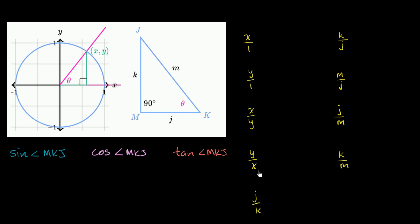On the right-hand side, we have a bunch of expressions that are just ratios of different information given in these two diagrams. Over here on the left, we have the sine, cosine, and tangent of angle mkj. Angle mkj is this angle right over here, same thing as theta. These two angles have the same measure. What we want to do is figure out which of these expressions are equivalent to which of these expressions.